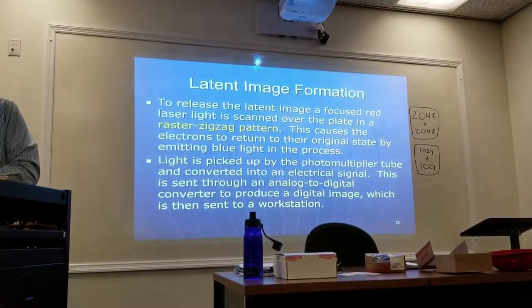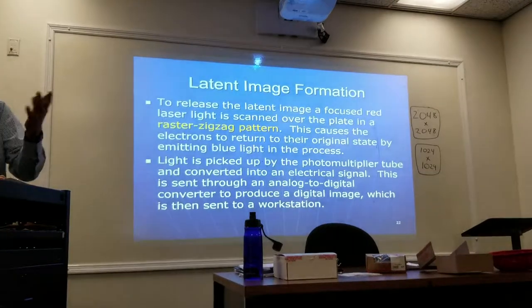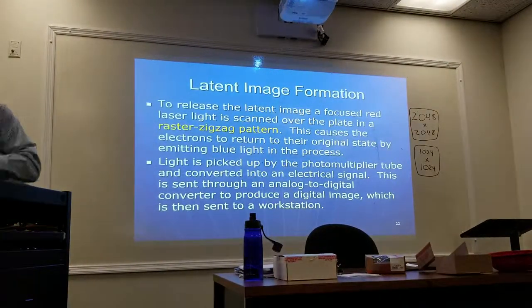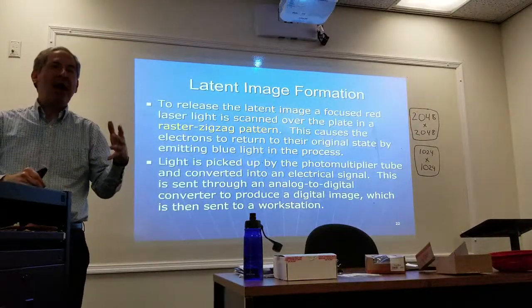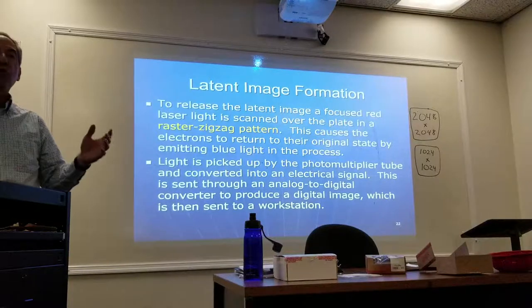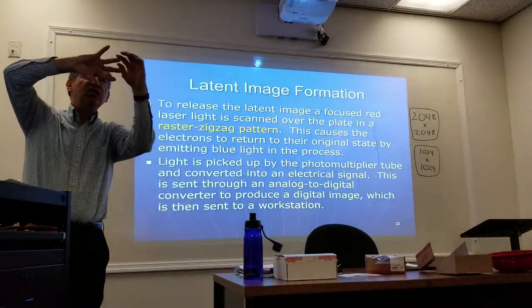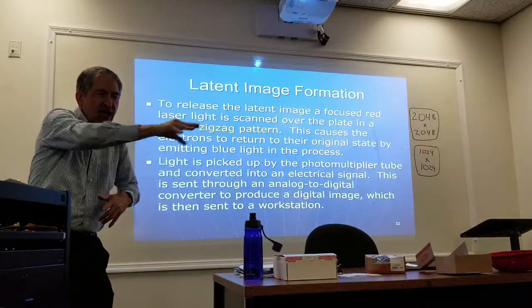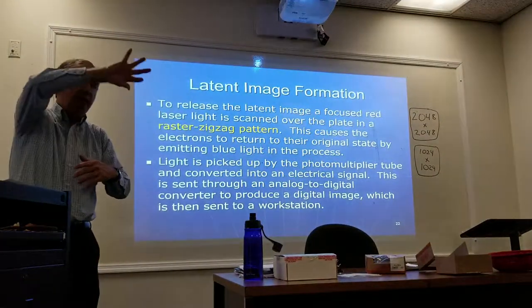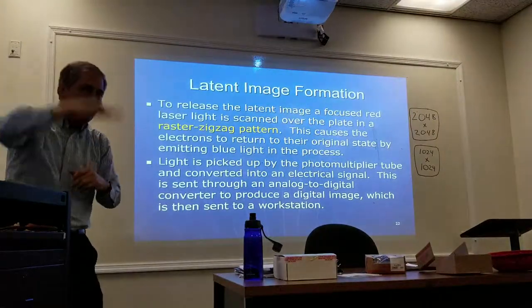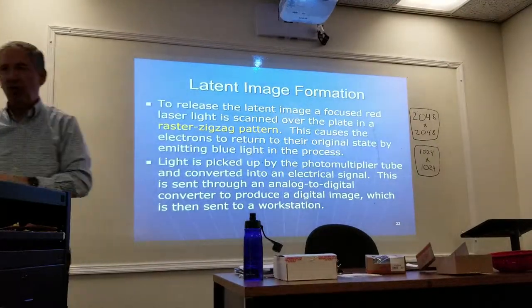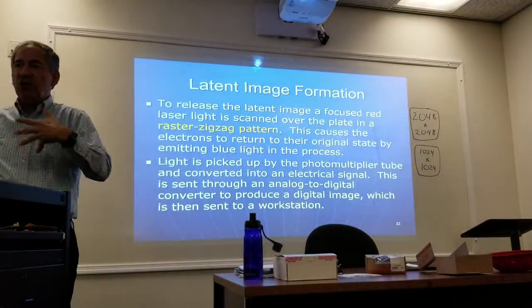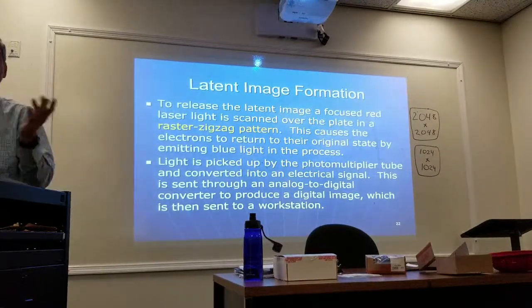The imaging plate is put in the reader. To release that latent image, once the x-ray photons strike the plate, a focused red laser light is scanned over the plate in what they call a raster zigzag pattern. Raster comes from the word 'rake' — think of a rake's teeth, each going over a row of pixels. It goes across, then down, then across again — that's the raster zigzag pattern.